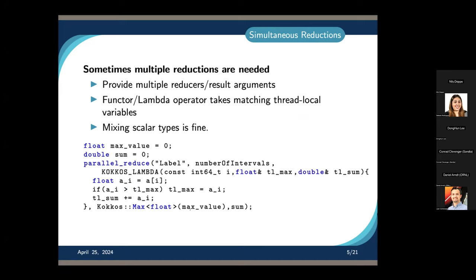What this actually means is that if max_value is a host-space variable, we need to copy it to the device to do something with it, and then copy it back at the end. But if the result is on the device — say you declare it as a float in the default memory space or CUDA memory space — then we avoid all these copies.